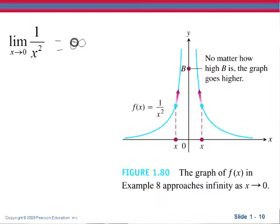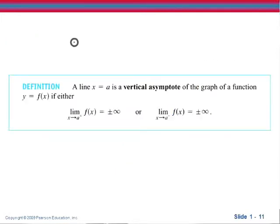Remember that we call those lines that our graph approaches vertical asymptotes. Now let's define a vertical asymptote: a line x equals a is a vertical asymptote of the graph of a function y equals f of x if either the limit as x approaches a from the left or the right is either positive or negative infinity.